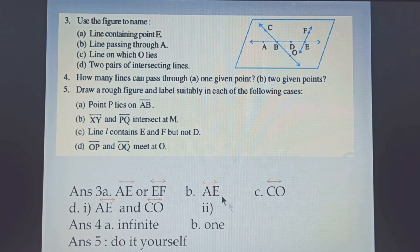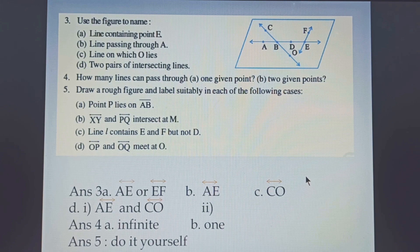Question number 4 asks: how many lines can pass through one given point? Suppose you have one point — you can draw endless lines through it, top to bottom, left to right, in any direction. So the answer is infinite or endless. Part B asks how many lines can pass through two given points. If you have two points, only one line can join them, so the answer is 1.